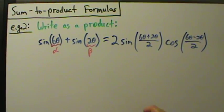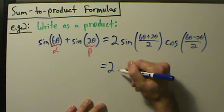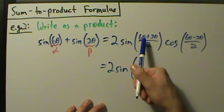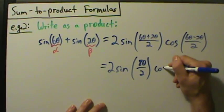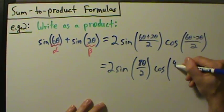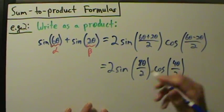Then we just simplify a little bit. So this is two times the sine of six theta plus two theta is eight theta and we're dividing by two there. Then we have the cosine of six theta minus two theta is four theta, and don't forget we're dividing by two.